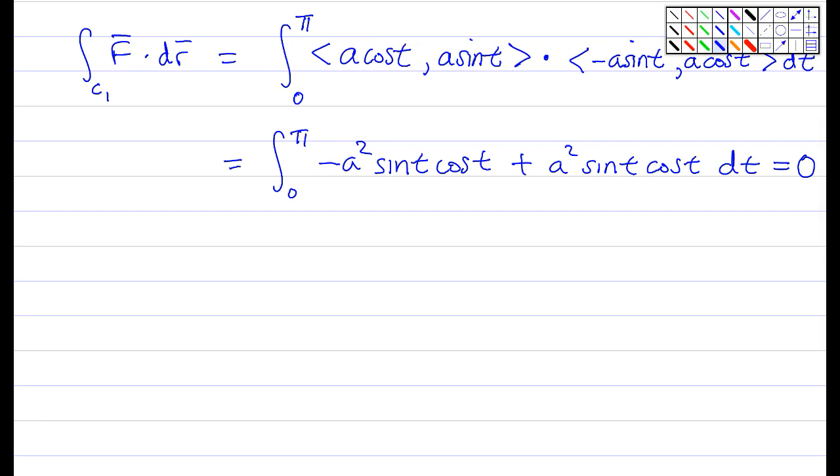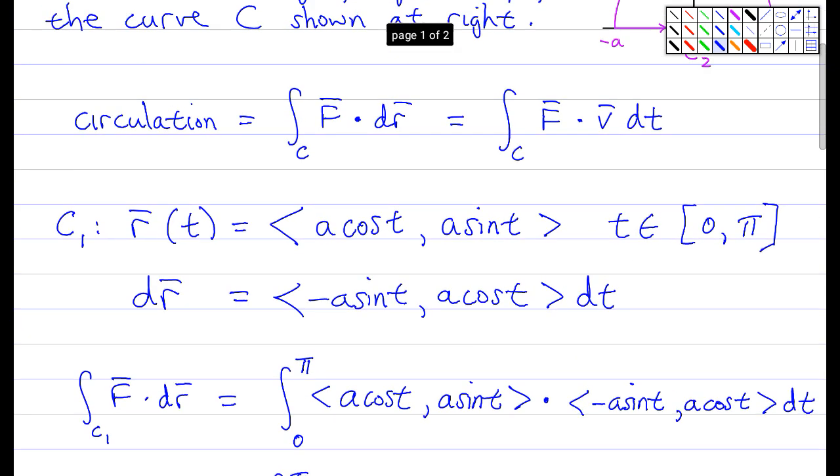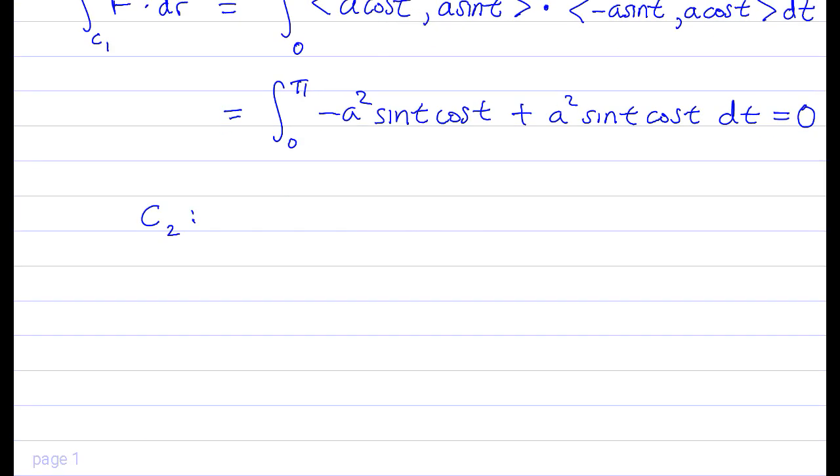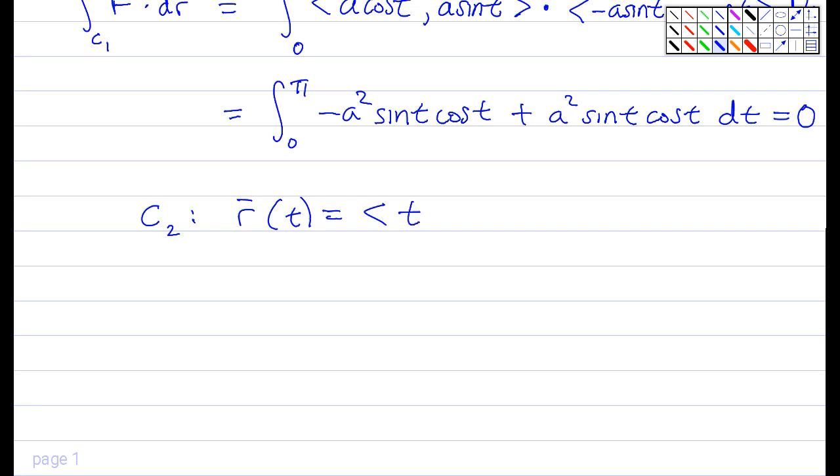To do the second part, we need the parameterization for that curve, which, just remind myself, scrolling up here, is just this line, which goes from minus a to a, and it's all along the x-axis. Well, that's a nice, easy parameterization. R of t equals, how about we just do t zero, right, because y is zero along the x-axis, and we'll just make t go from minus a to a, and that will do it for us. dR, we're going to need that as well, take the derivative, one zero dt.